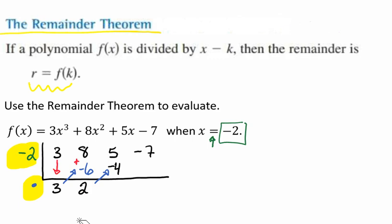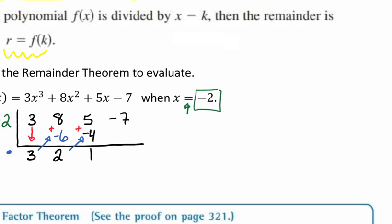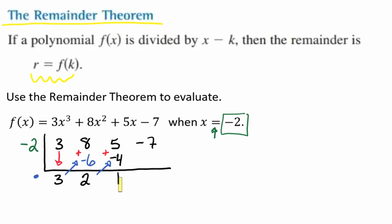And so now, from here, we're able to add 5 plus negative 4, which is a 1. And now, we're going to multiply our 1 times negative 2. When we do that, that gives us a negative 2.